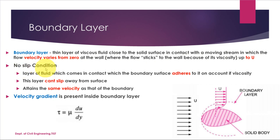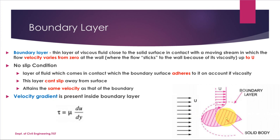The no-slip condition: the layer of fluid which comes in contact with the boundary surface adheres to it on account of viscosity. The fluid particles close to the boundary stick to the solid body due to viscosity and cannot slip away, so they have the same velocity as the solid body. There will be a velocity gradient inside the boundary layer. The original velocity U is known as the free stream velocity.